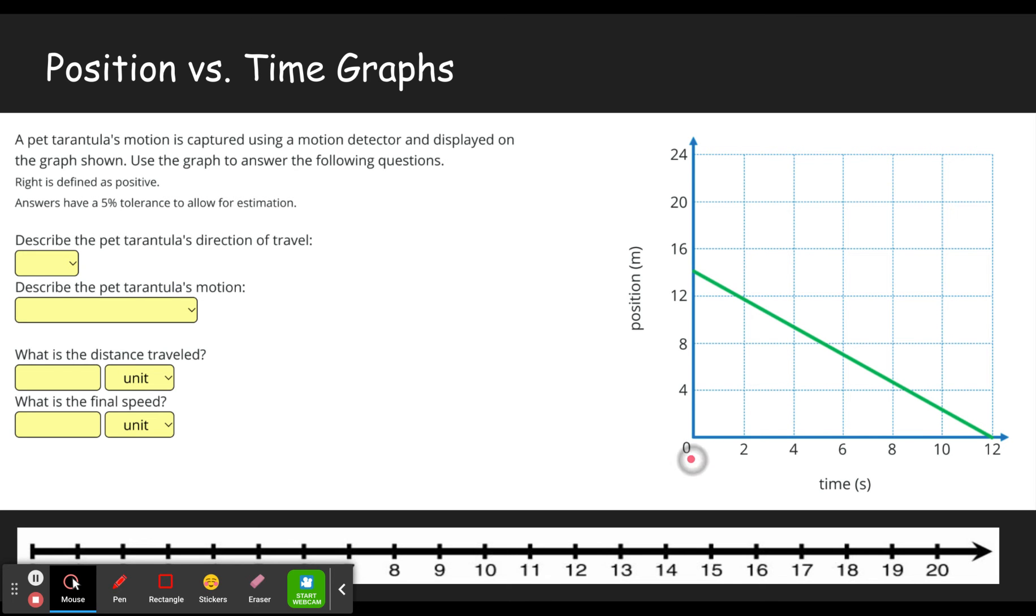And we see that at time zero, this object is starting out at about 14 meters from the center of the room. And we can see as time goes on it's getting closer and closer to the center of the room. At 12 seconds it is at the center of the room. So it starts somewhere over on the right side of the room and after two seconds it's a couple feet closer to the center of the room. After four seconds it's a few feet closer to the center of the room and so forth until we get to 12 seconds when it's at the center of the room. So if it's starting on the right side of the room and it's going to end up in the center of the room, that means this is traveling to the left, this pet tarantula.